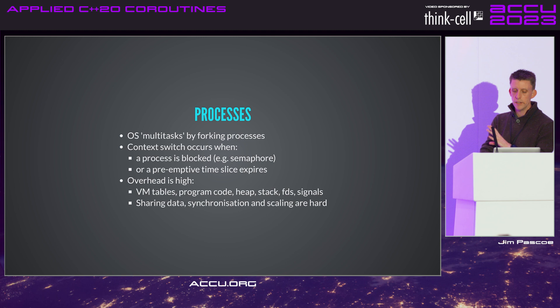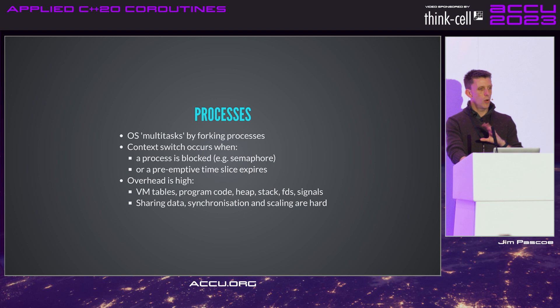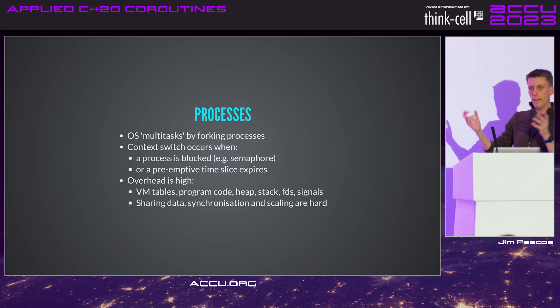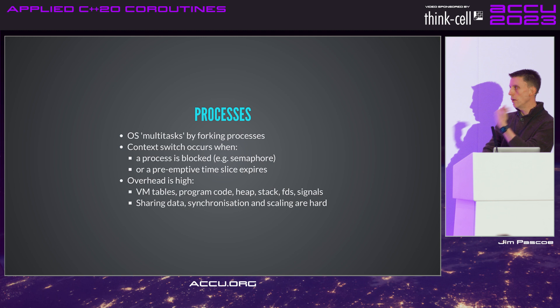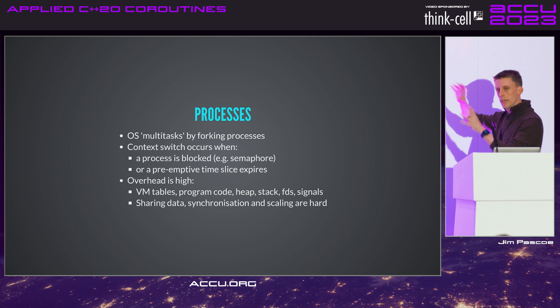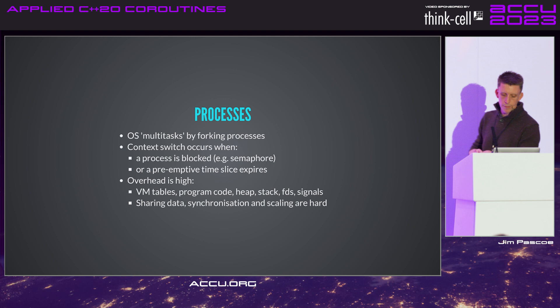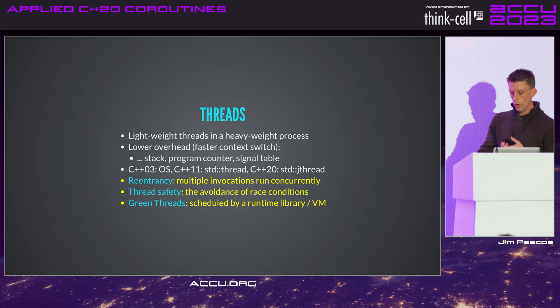Going into more detail: the OS multitasks by forking processes. We get a context switch when a process is blocked — on a semaphore, async operation, or when a preemptive time slice expires. The overhead of context switching is quite high: virtual memory tables, program code, heap, stack, file descriptors, signals — all have to be saved and restored, plus the hardware caches have to drain and warm up again. Things like sharing data, synchronization, and scaling are relatively tricky.